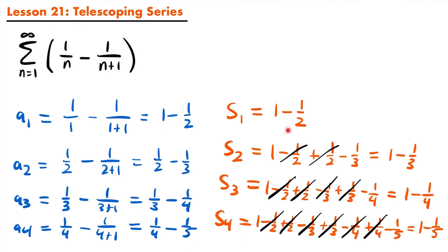By looking at the first four partial sums, you can get the idea of what we mean by a telescoping series where the terms collapse. All of the middle terms of each partial sum cancel each other out, and we're just left with the first term and the last term. This is going to continue on forever with every single partial sum for this series.